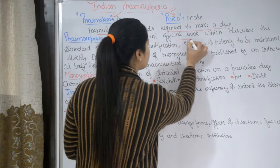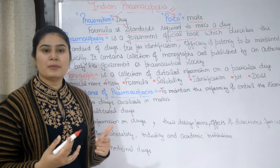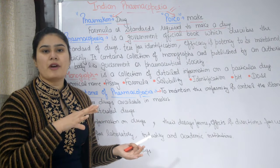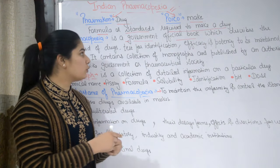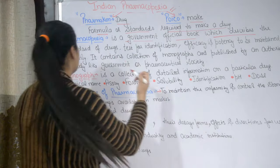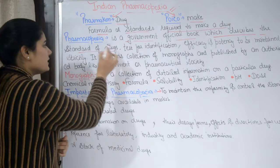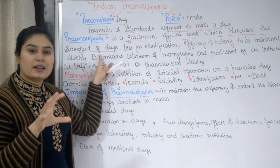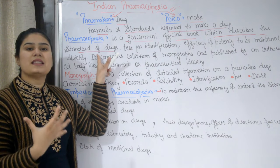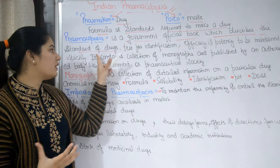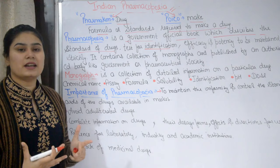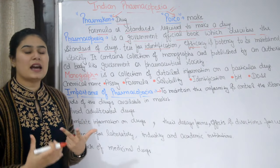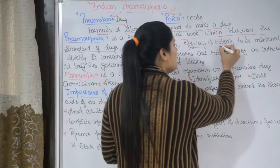Pharmacopoeia is an authorized government official book in every country. Some countries don't have their own pharmacopoeia, so they depend on another country's official pharmacopoeia book. The standard of drugs and medicines are described in pharmacopoeia — standard means quality standards, including test for identification, efficacy of the drug, uses, effects, indications, contraindications, and potency, all of which need to be strictly maintained.